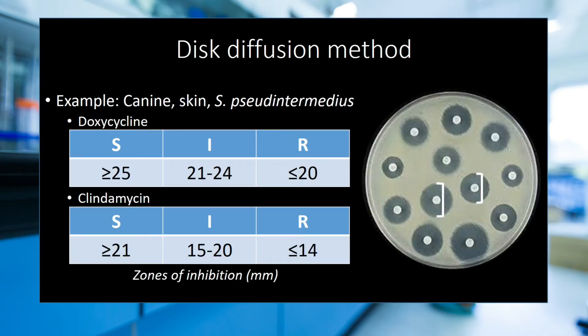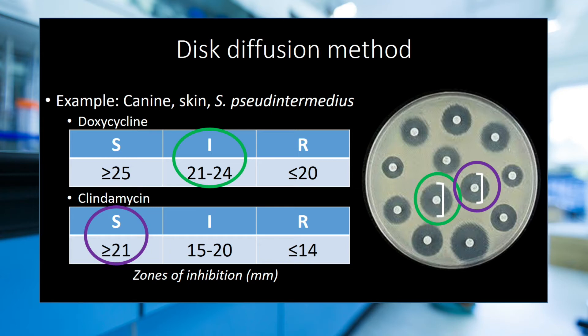We'll start with the disk diffusion method. If you think that a bigger zone is better, pay attention. In the tables, you can see the published interpretation standards for doxycycline and clindamycin for staph from canine skin. A zone diameter of 24 mm around the doxycycline disc results in an intermediate interpretation. A zone diameter of 21 mm around the clindamycin disc results in a susceptible interpretation. This illustrates the importance of not comparing the zones of inhibition between drugs, but rather comparing each zone to the appropriate interpretation standard. In this example, the drug with a smaller zone is actually the better choice.